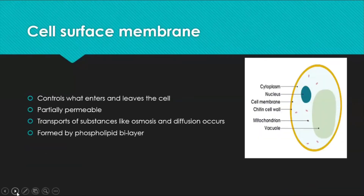The first organelle is the cell surface membrane — a very thin layer. In plant cells there are two layers: a cell wall followed by an inner cell membrane. In animal cells there is only a cell membrane. The function of the cell membrane is to act as a barrier and control what enters and leaves the cell. It is a partially permeable membrane and helps in diffusion and osmosis.